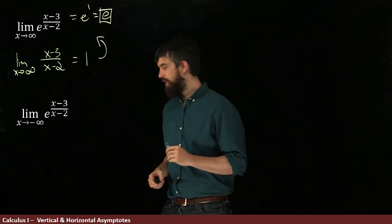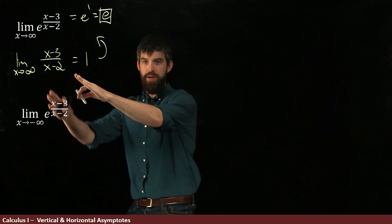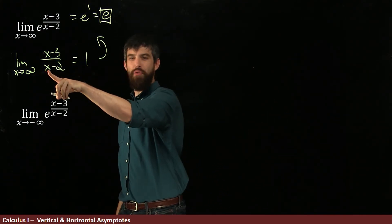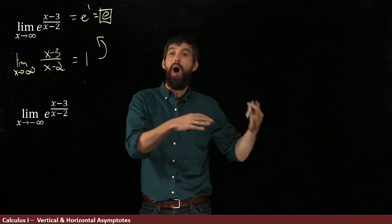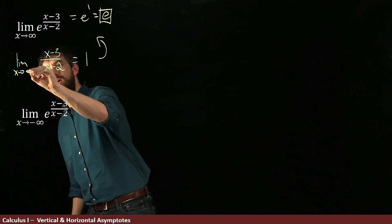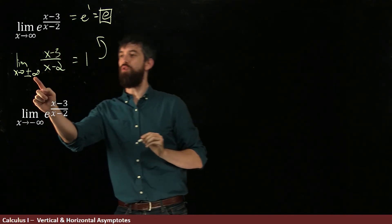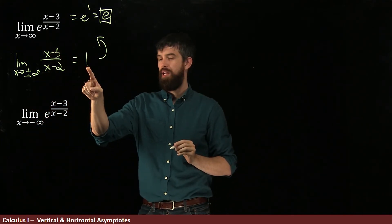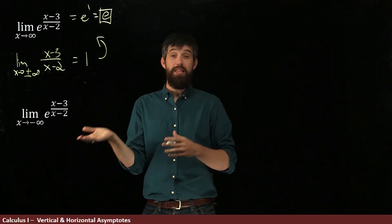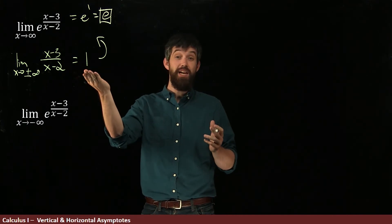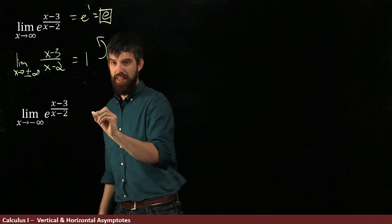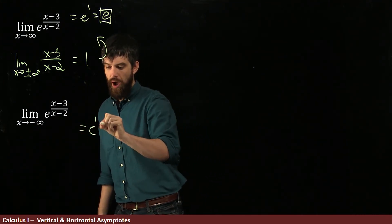What about negative infinity? It's the same inside function, but at minus infinity. Does that change anything? This is just x over x — the highest powers cancel, so it's 1 either way. We can replace the infinity with plus or minus infinity; either way the inner limit equals 1. Note this is not always the case — if I had something like a square root, the limits at positive and negative infinity could differ. But here they're both 1. Feeding this into the outer function gives e to the 1, or in other words, e.